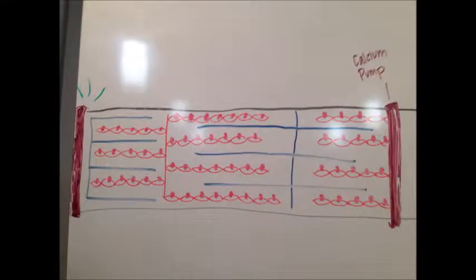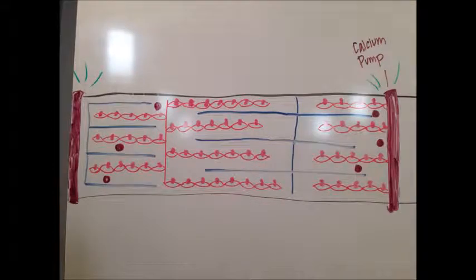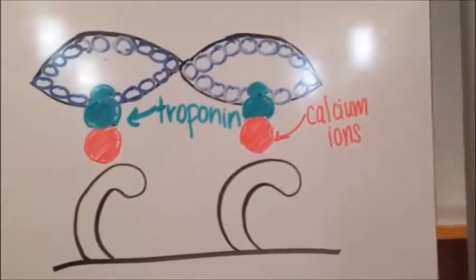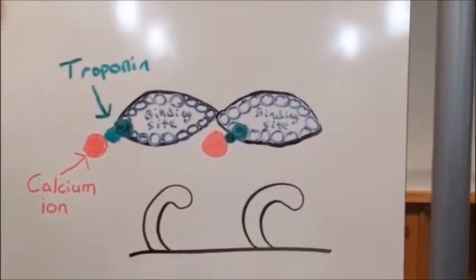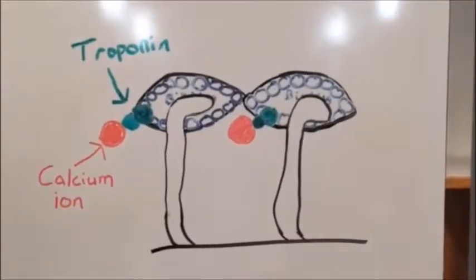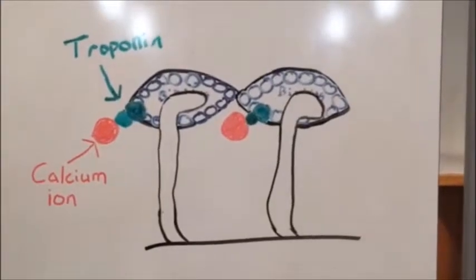The impulse signals the calcium pumps to release calcium ions into the sarcomere. Calcium ions are charged particles that will bind to troponin and move them, leaving an exposed area for myosin to grab for the start of muscle contraction.